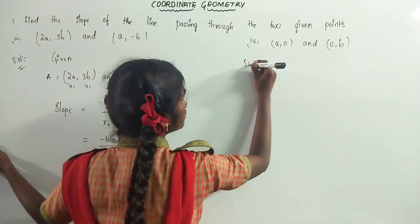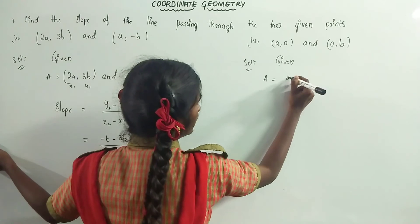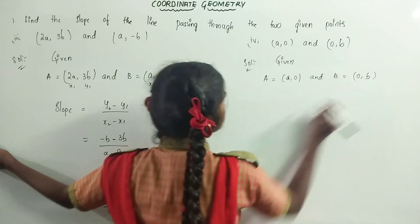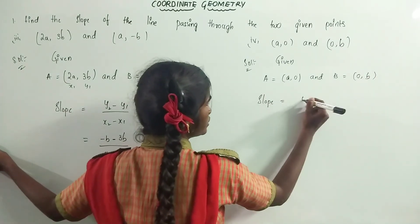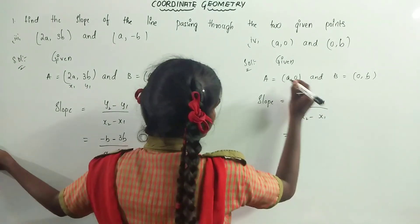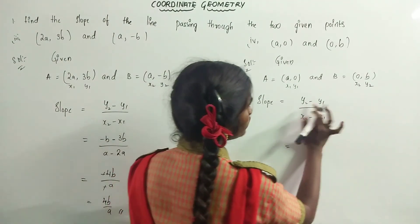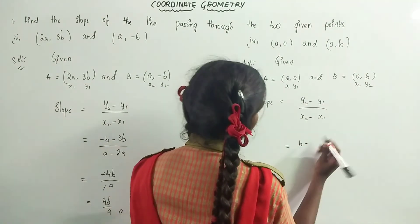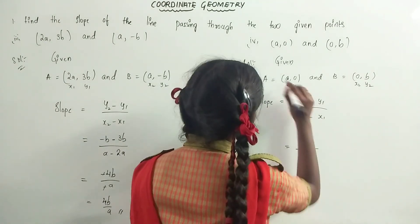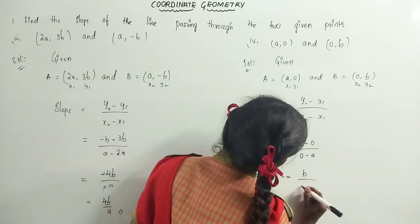Now we have to find the fourth one. Given: A is equal to (a, 0) and B is equal to (0, b). Slope is equal to y2 minus y1 by x2 minus x1. y2 is equal to b, minus y1 is equal to 0, by x2 is equal to 0, minus x1 is equal to a. So we get b minus 0 equals b, by 0 minus a equals -a.